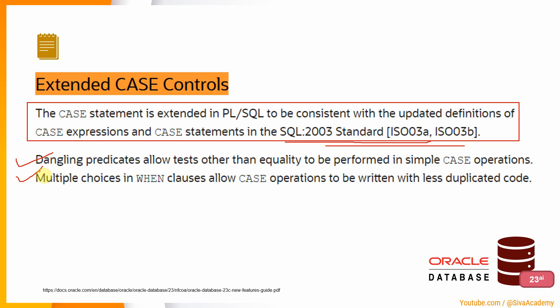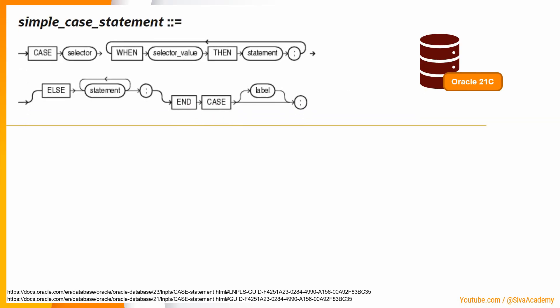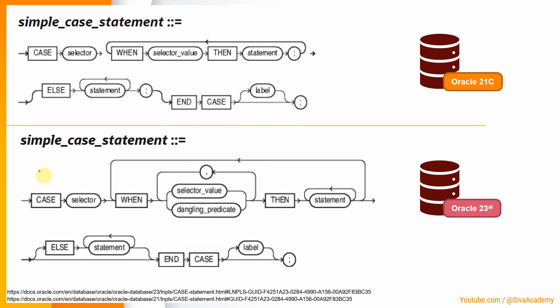Before showing examples, let's quickly check the syntax differences between 21c and 23c AI. In the 21c syntax versus 23c AI syntax, there are two changes visible in the WHEN clause: the selector value can be multiple values, and there is a dangling predicate clause included. These are what we are going to see as part of two examples.